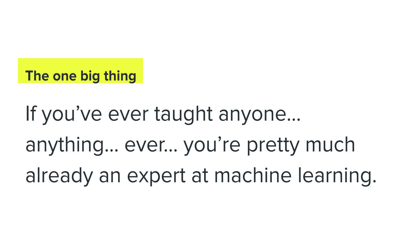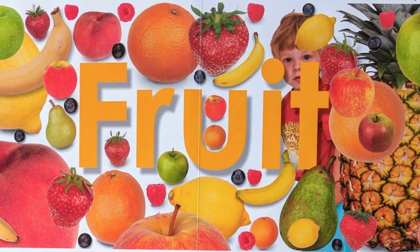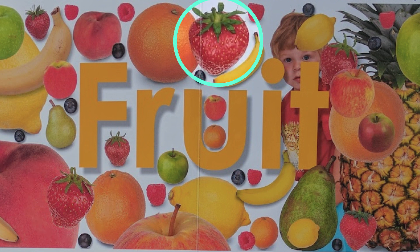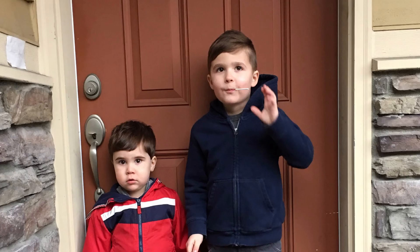If you've ever taught anyone anything, you already know how to do machine learning. Supervised learning with my son looks like pointing to a strawberry and saying 'strawberry' — it's machine learning in child format. But to train a model you need to do that like a hundred thousand times.